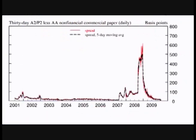The next tool the Fed has for controlling spending in the economy is changing the discount rate. The discount rate is the interest rate that banks pay to borrow funds directly from their Federal Reserve Bank. Banks are only required to hold onto a certain percentage of their customers' deposits, which is known as the reserve requirement. If a large withdrawal is made, to keep from falling below the reserve requirement, banks may need to borrow money from the reserve bank. The interest rate they pay on this loan is called the discount rate.